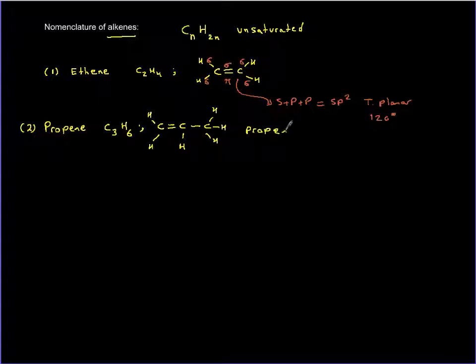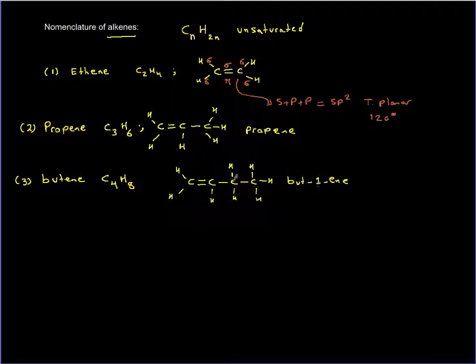The third member is butene, which has structural isomers. The generic formula for butene is C4H8. The first isomer has a double bond between the first and second carbon. This is called but-1-ene, where the one stands for the location of the double bond.